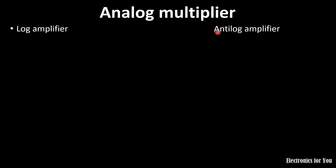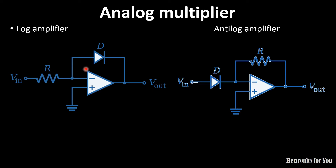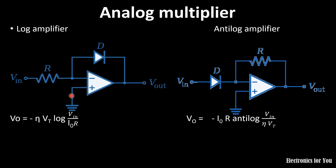In a log amplifier, if we replace the feedback resistance of an inverting amplifier with a diode, the circuit is called a log amplifier. If we interchange the resistance and diode, it is called an antilog amplifier. The output voltage for the log amplifier is given by Vo = −η·Vt·log(Vin / I0·R), where η is the ideality factor of the diode, Vt is the thermal voltage, I0 is the saturation current, and R is the resistance.